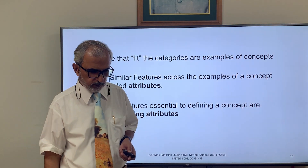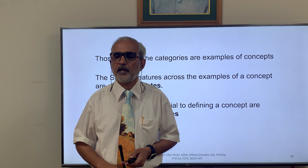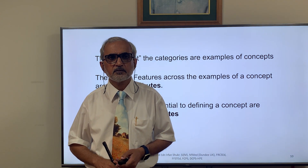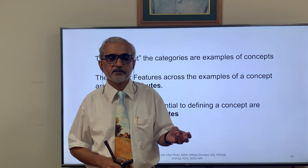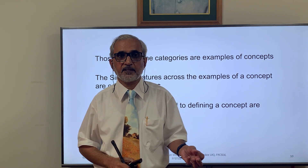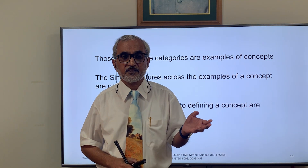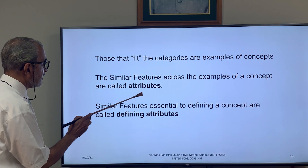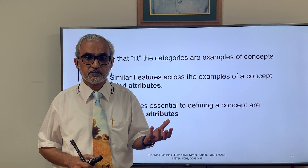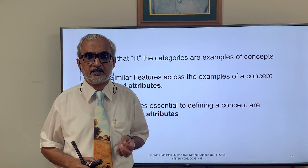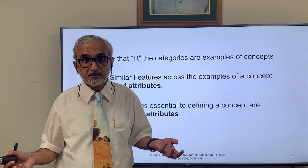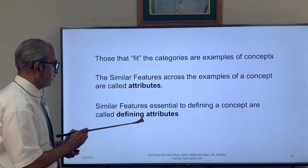Let me give a hypothetical example. Take the concept 'bird.' What do birds have in common? They have a beak, wings, a tail, feathers, and they can fly. Since these are common characteristics, they are the attributes. Then I might ponder: out of all these attributes, which must be present to call something a bird? That could be wings, or the ability to fly. Those constitute the defining attributes.